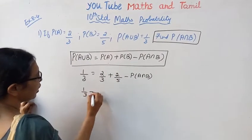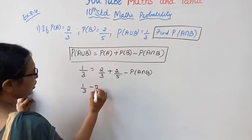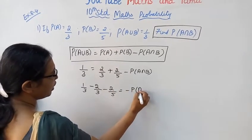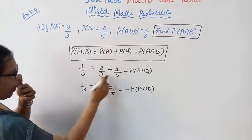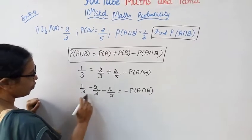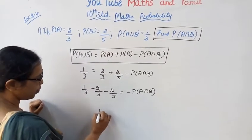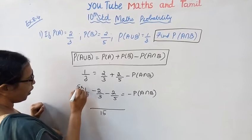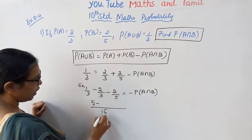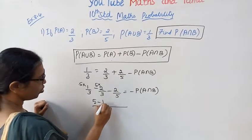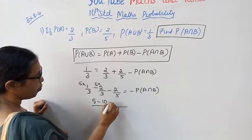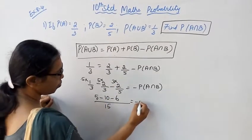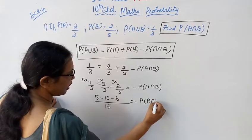Now 1 by 3 equal to the left hand side minus 2 by 3 minus 2 by 5, equal to minus P of A intersection B. 3 into 2 is 6, equal to minus P of A intersection B.